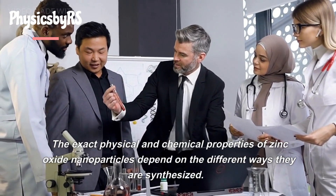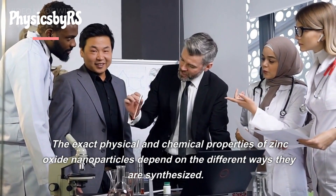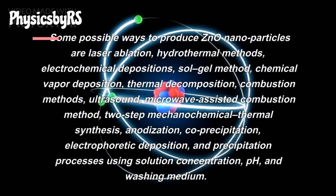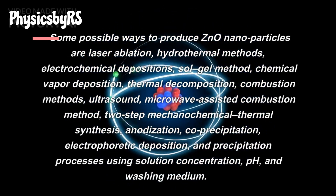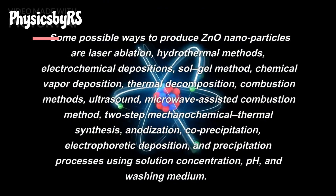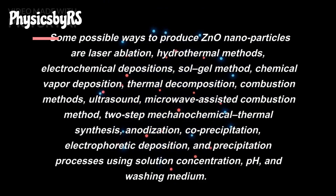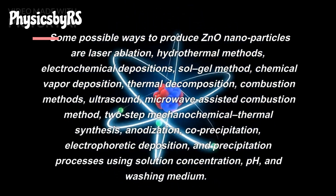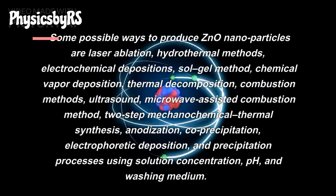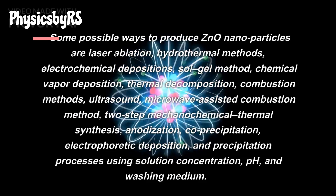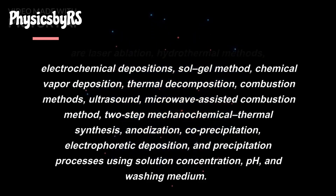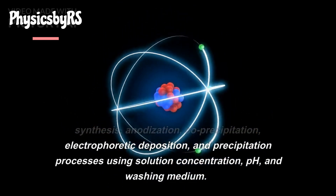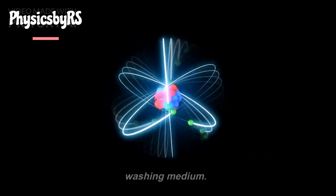The exact physical and chemical properties of zinc oxide nanoparticles depend on the different ways they are synthesized. Some possible ways to produce ZnO nanoparticles are laser ablation, hydrothermal methods, electrochemical depositions, sol-gel method, chemical vapor deposition, thermal decomposition, combustion methods, ultrasound, microwave-assisted combustion method, two-step mechanochemical thermal synthesis, anodization, co-precipitation, electrophoretic deposition, and precipitation processes using solution concentration, pH, and washing medium.